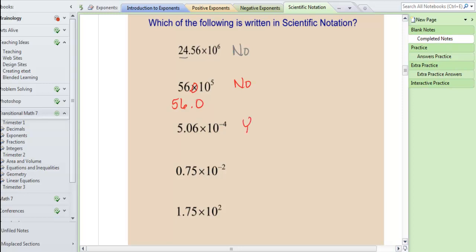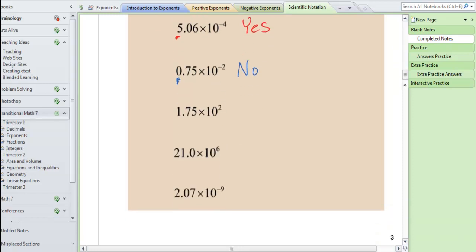The next one is a yes. We have one digit to the left of the decimal which is perfect. The next one then is going to be no. We don't have any digits to the left of the zero. Zero does not count as a digit. That's just a placeholder there.